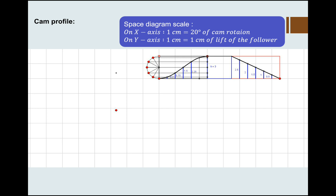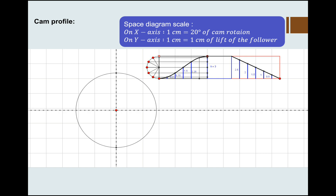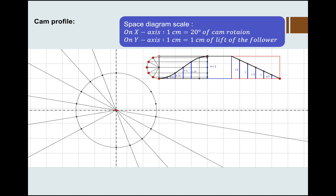Now let us see how to draw the cam profile. The least radius of the cam is 5cm, so we draw a circle of 5cm. The outstroke is 120 degrees — divide this circle into 6 equal parts during the outstroke, then there is a dwell period, then again divide the return stroke into 6 equal parts and draw lines through these. The distances 0.75, 1.5, 0.25 that we measured are transferred onto these lines, and then a smooth curve is drawn through those particular points.